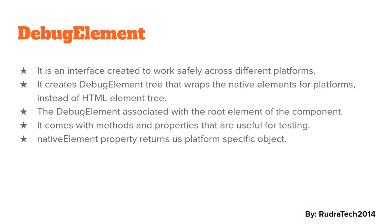Whenever we are performing our application unit testing, we need to make sure that the elements being returned are platform specific. Debug element provides that utility to get elements according to the current platform and creates a debug element tree that wraps the native elements for the given platform instead of an HTML element tree.